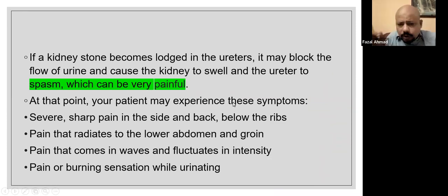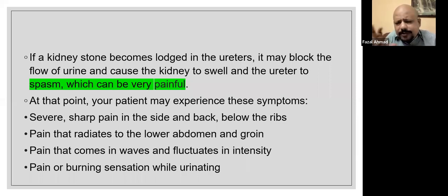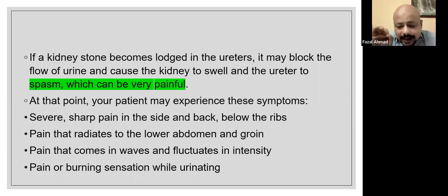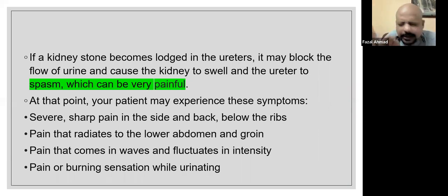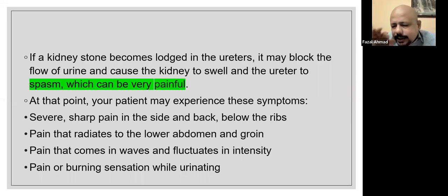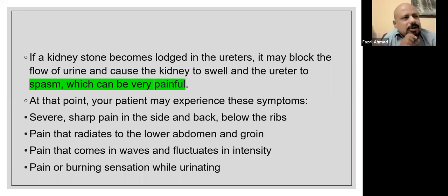If a kidney stone becomes lodged in the ureter, it may block urine flow, causing the kidney to swell and ureter spasm, which can be very painful. During scanning, you will find the kidney quite enlarged and the patient suffering from hydronephrosis. You must then find where the stone is. When a stone is below 5 mm, it can enter the urinary bladder easily and pass out, or may block the urethra.